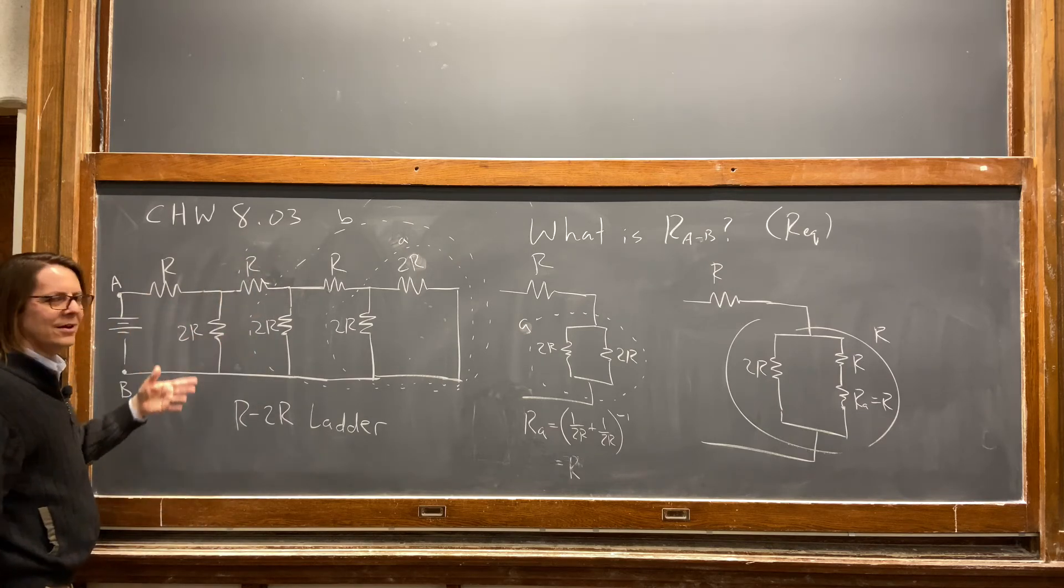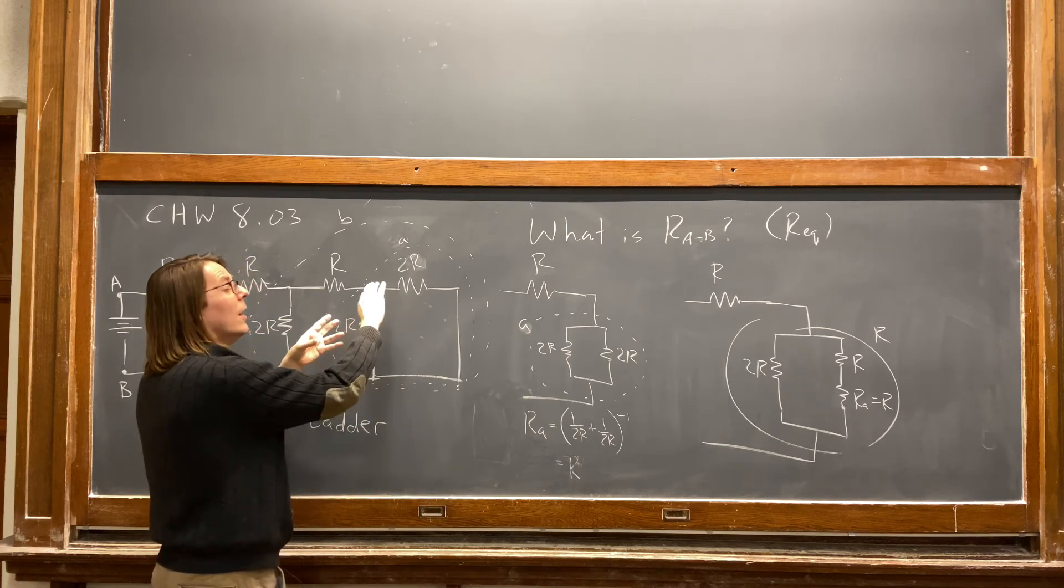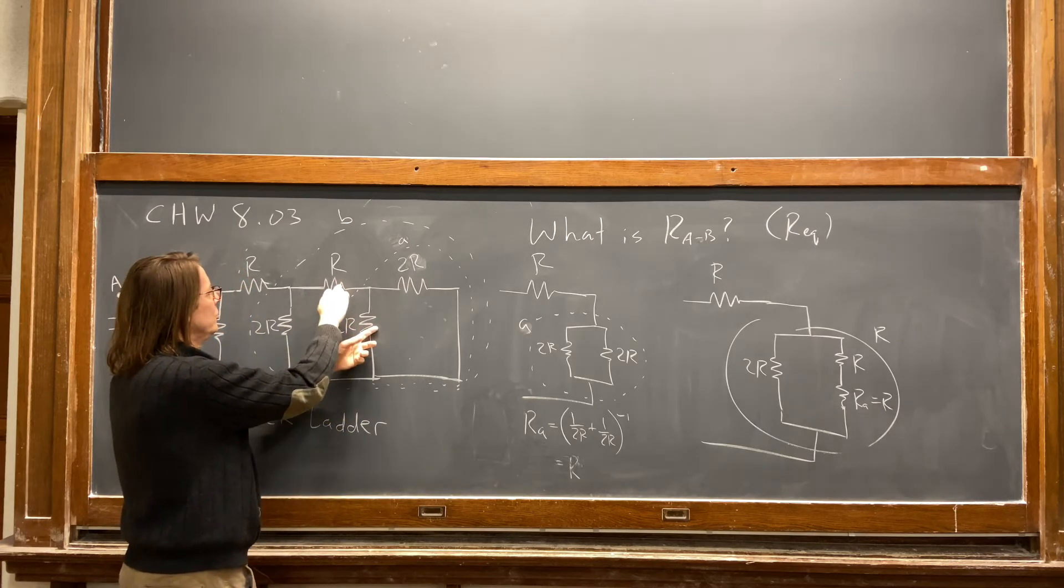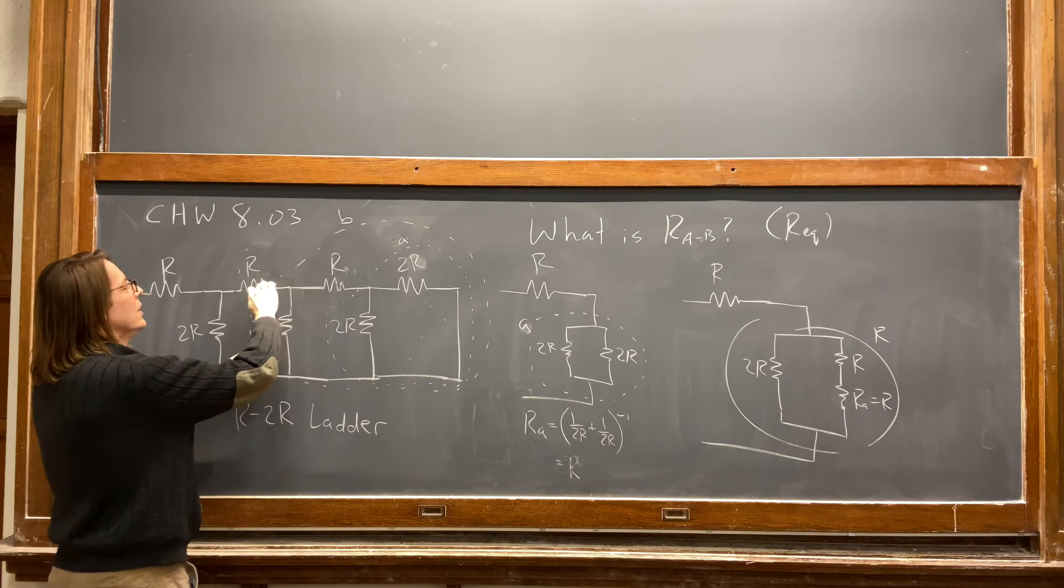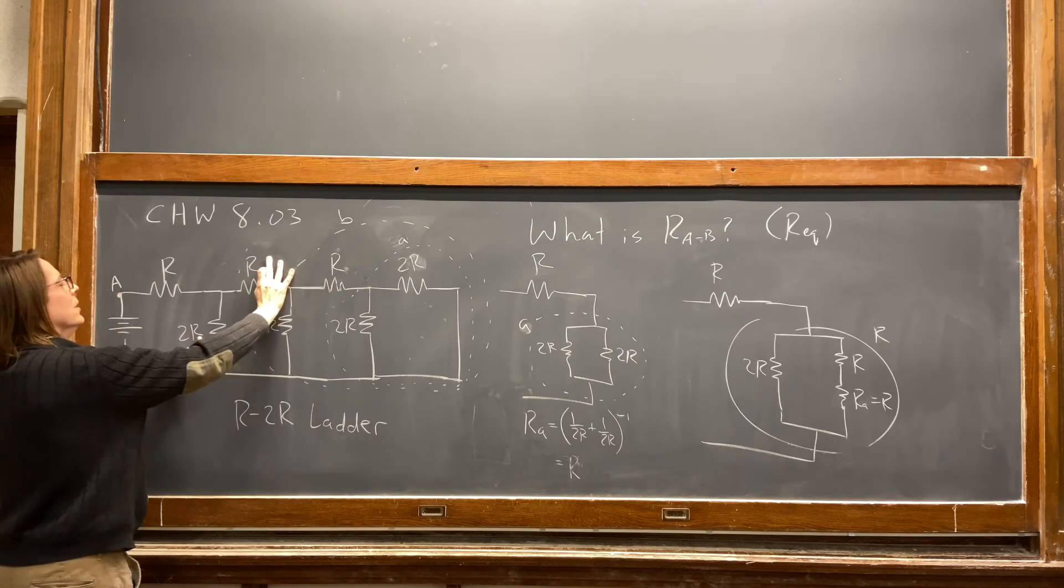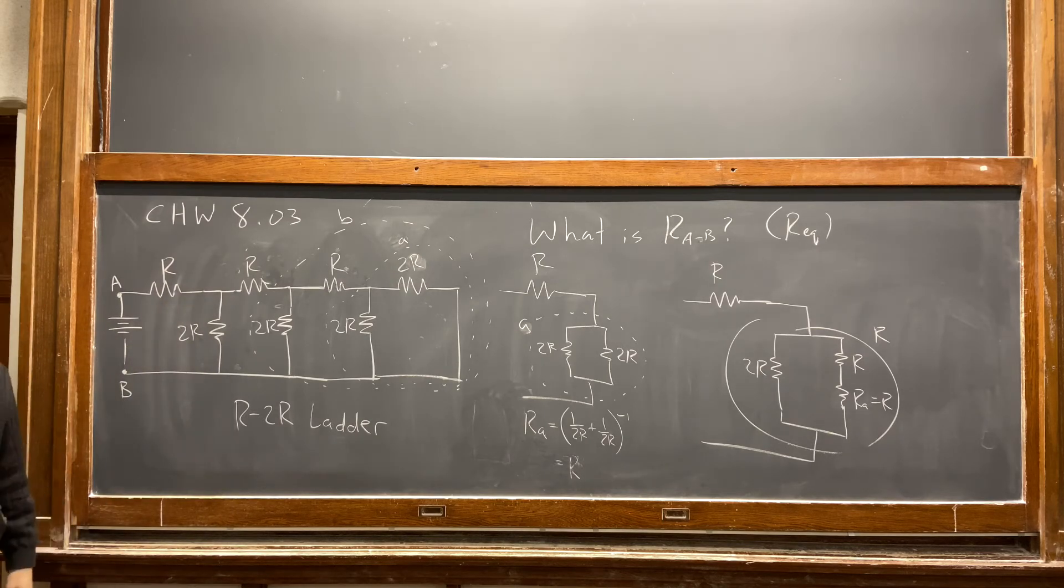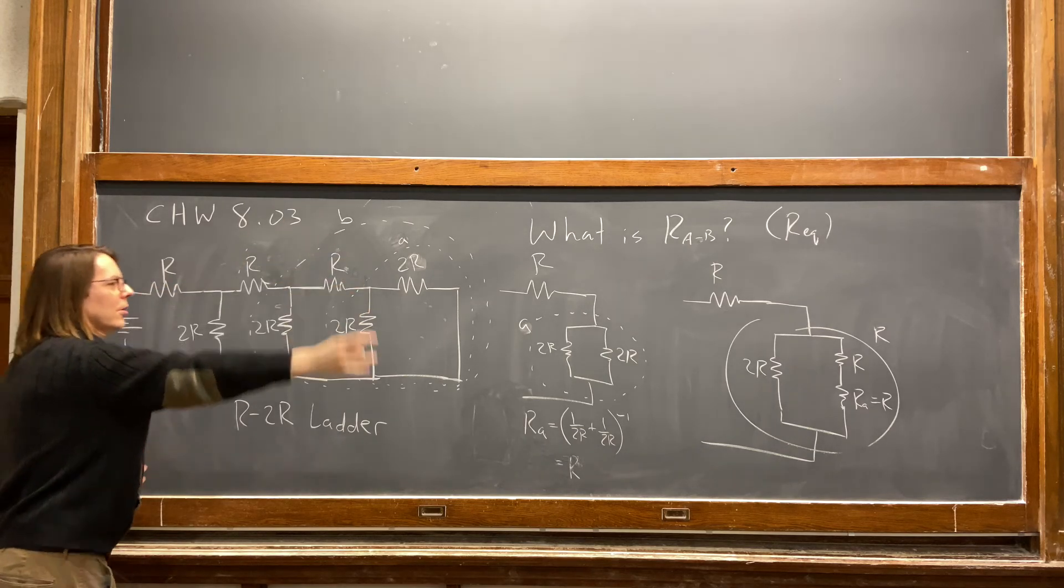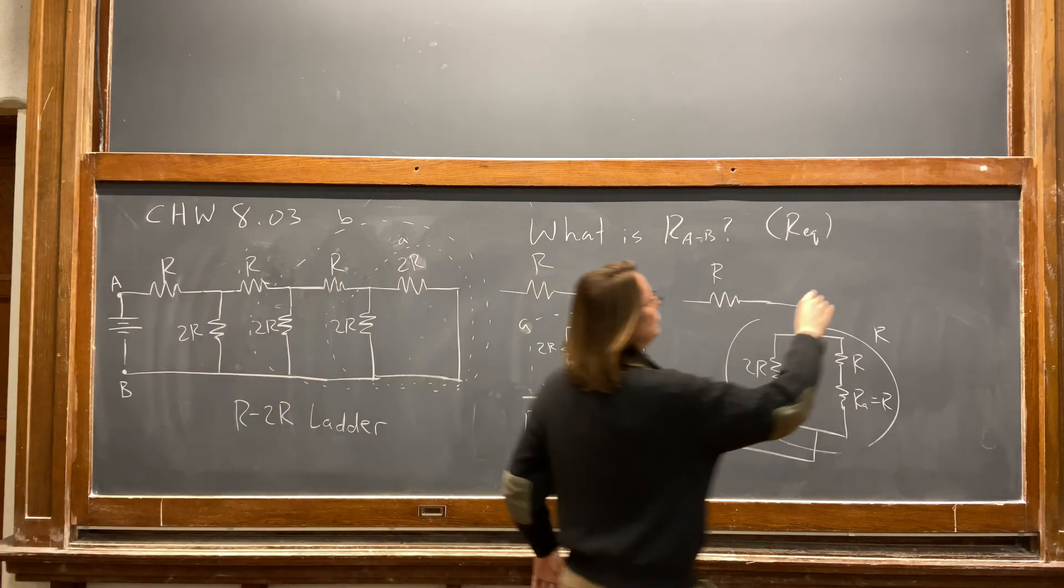So then you do it again. So basically, every time this branch, this two resistor parallel branch turns into R, and you add it to this one in series, and it becomes 2R. And that 2R and that 2R make R. And you add it in series, and it becomes 2R. And that 2R and that 2R makes R. And you add it in series, and then you're done. All right, so that's why the answer is, in the end, when you finally reach the front, it's R plus R, the whole thing in series. So the answer to this question is 2R.